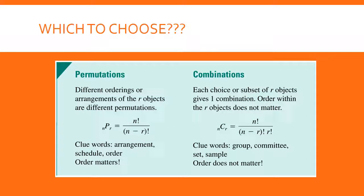It can be easy to confuse the two, so here's a summary comparing them. Remember: with permutations, ordering is important, and the number of permutations will always be larger than the number of combinations for the same parameters. Clue words for permutations are: arrangement, schedule, order. Clue words for combinations are: group, committee, set, sample. Permutations — order matters; combinations — it doesn't.